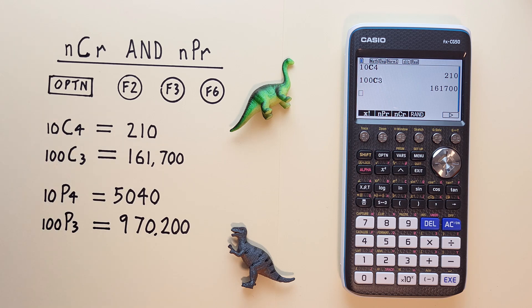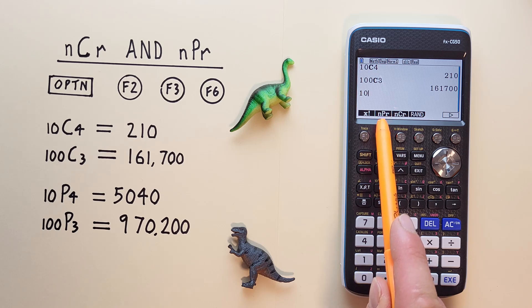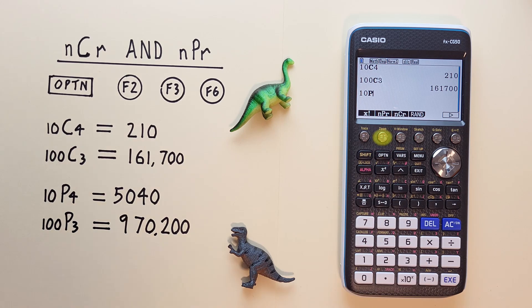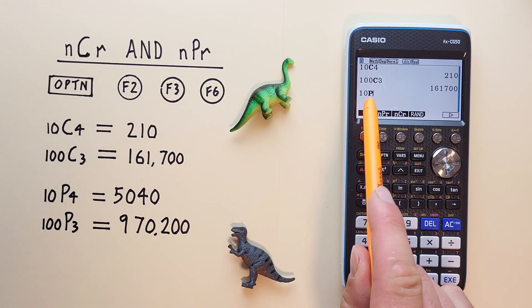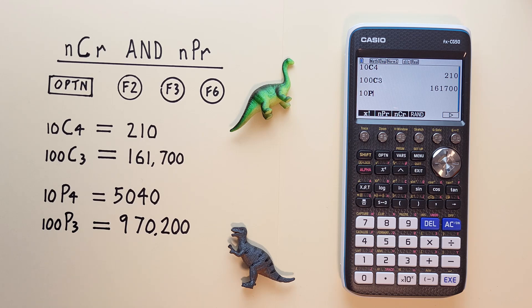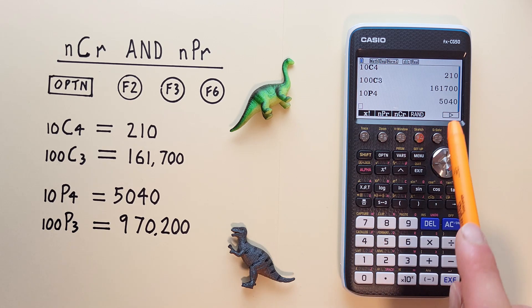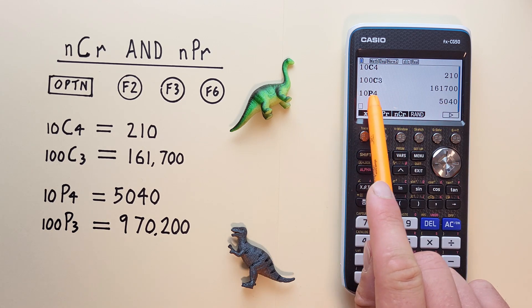To do this, again, we start by entering the number of objects. So if we had 10 choose 4 permutations, we start with the 10, and then we choose the nPr or permutation. We see the P there, telling us it's a permutation, and then we enter the 4 and hit execute. And we see we get 5,040 possible permutations.